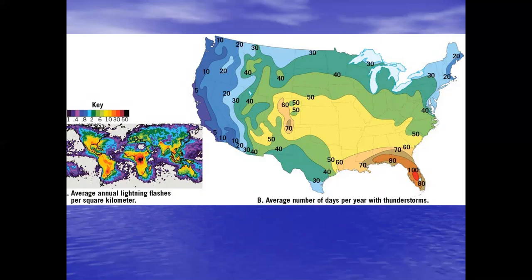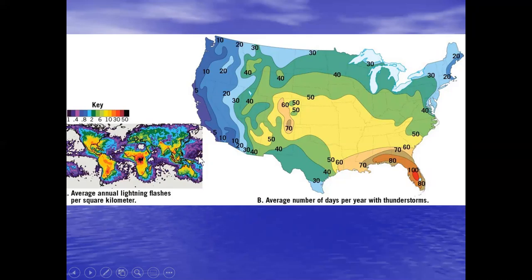Looking worldwide, the inset on the left shows the average annual lightning flashes per square kilometer, which we're equating with thunderstorm frequency. If you pay attention to where those areas are, think back to the intertropical convergence zone. These areas of thunderstorms are going to be where the ITCZ is most influential. Some areas are always under its influence — like the Congo in Africa, the Amazon basin, and portions of Indonesia — so of course those areas show up with high average annual lightning flashes.